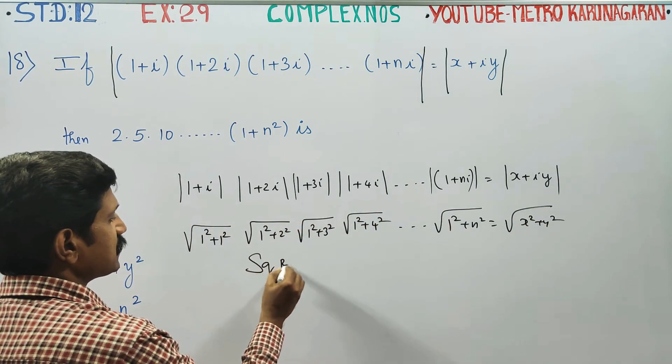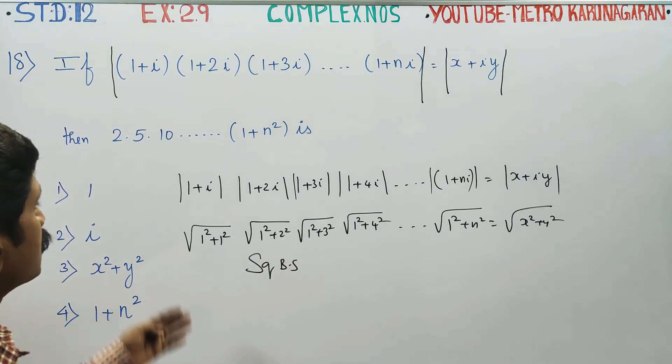Then squaring both sides, square root all square, then you can remove the root.